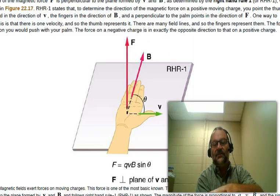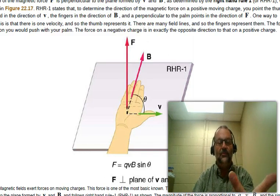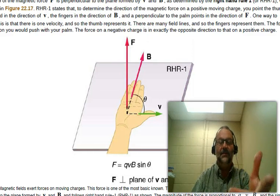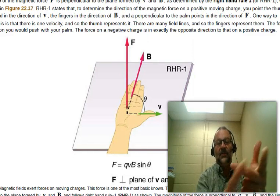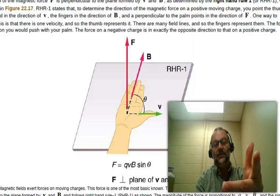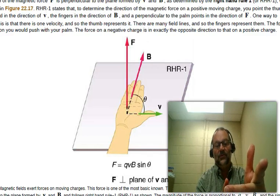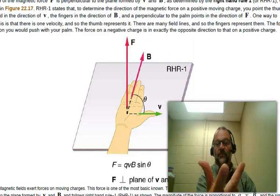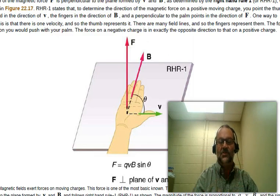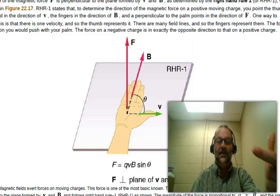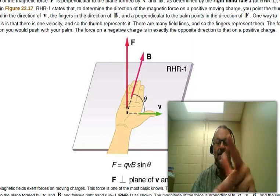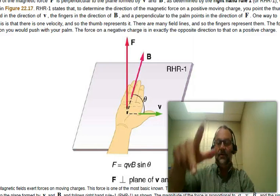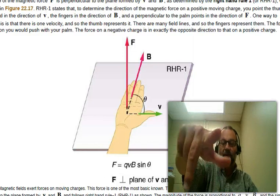If the charge is negative, you can just flip over and use your left hand, and then the index finger is still the velocity, the B-field is still your middle finger, and the force then is the thumb. So for the right hand, positive charges, for the left hand, negative charges, and hopefully that will help you keep it straight.